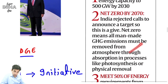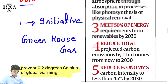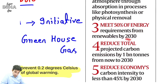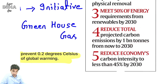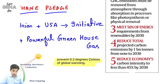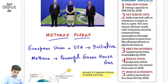2070 tak hum net zero honge - jitna carbon plus ho raha hai utna hi carbon hum minus compensate karenge, total ho jayega zero. Third: 50% energy renewables se laani hai. Fourth: reduction karni hai carbon emission 1 billion ton ki from now to 2030 - matlab carbon emission ko bhi kam karna hai. Aur jo economy ki carbon intensity hai usko bhi 45% tak reduce karna hai. Toh yeh keywords yaad rakhiye.